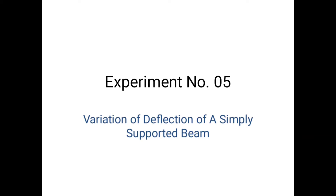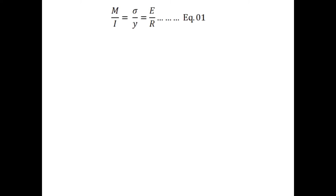For verification of the theory, first consider the pure bending equation: bending moment over the second moment of inertia about the bending axis equals the bending stress at distance y from the neutral axis, which equals the modulus of elasticity over the radius of curvature. Take this as equation 1. Next, take a look at this equation: 1 over the radius of a beam equals the second derivative of the deflection of the beam with respect to the deflection-measuring distance from the selected origin.